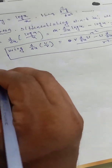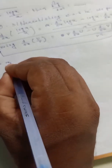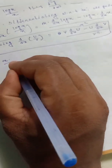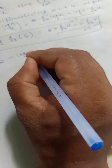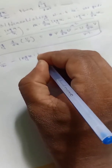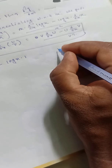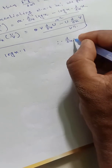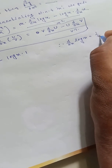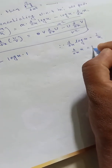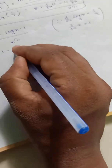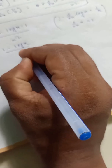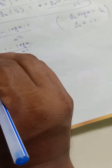So dy by dx equals x times the derivative of log x, which is 1 by x, minus log x times 1, divided by x square. This simplifies to 1 minus log x by x square, so dy by dx equals 1 minus log x by x square.